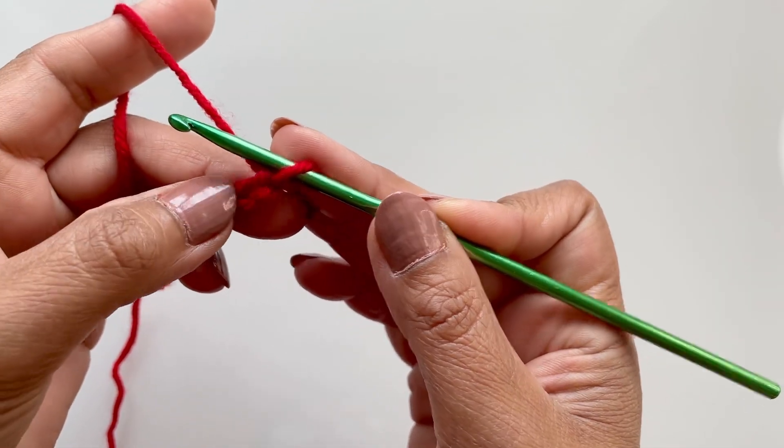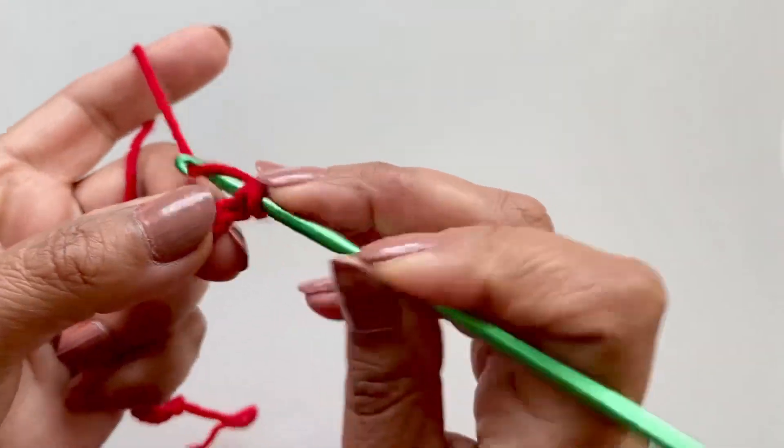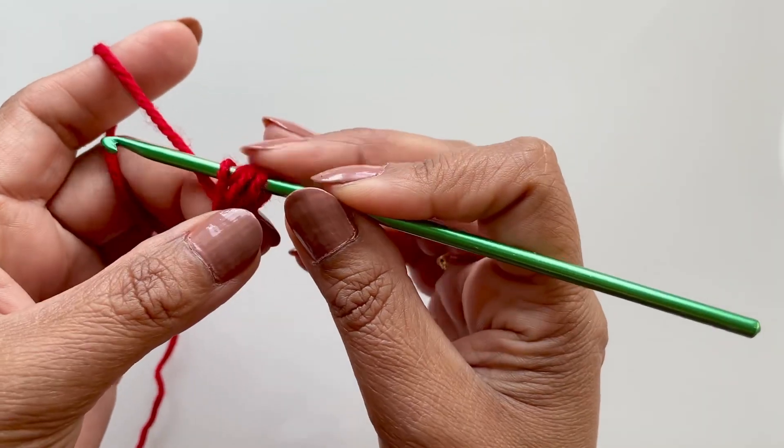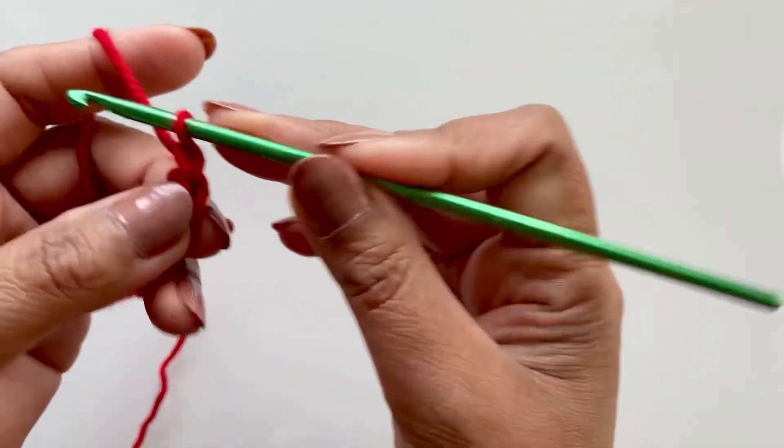And it is so simple but yet so pretty and elegant. So, not the first chain, the second chain, no yarn over, just go straight into there, pull up a loop, then yarn over, in again and pull up a loop. You've got 4, pull through all 4, chain 1.